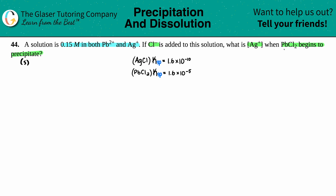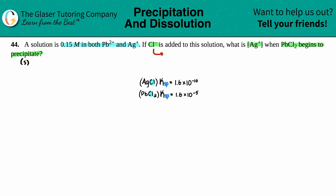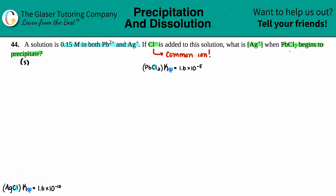They gave us the hint that PbCl₂ is going to begin to precipitate first, so we'll use that information. Between AgCl and PbCl₂, is there an ion in common? Yes — it's Cl⁻, acting as a common ion. Common ions are ions that are the same in both equations. We're going to use that idea to find the common molarity. For now we'll work with PbCl₂ since that's what precipitates first.